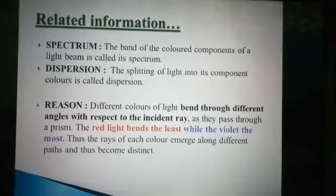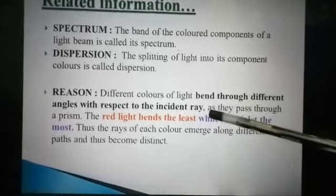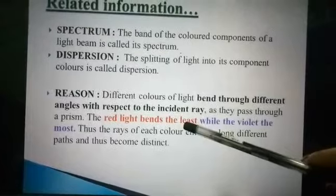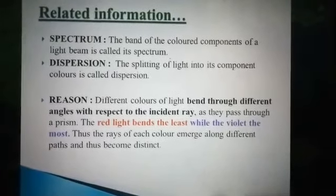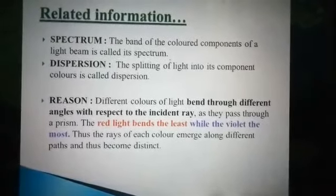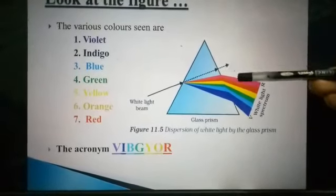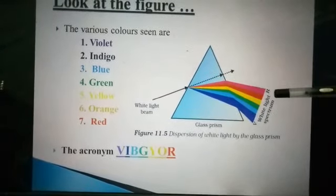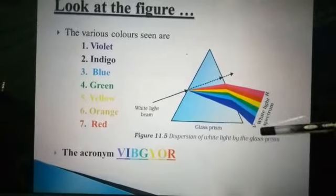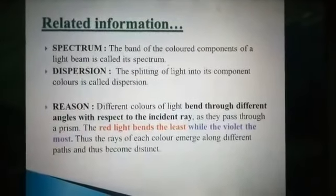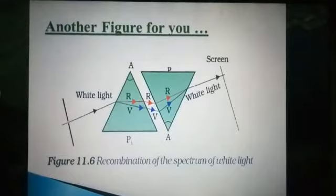As light passes through a prism, which color bends least? Red. And which color bends most? Violet. So red deviates least and violet deviates most — this is all about dispersion.